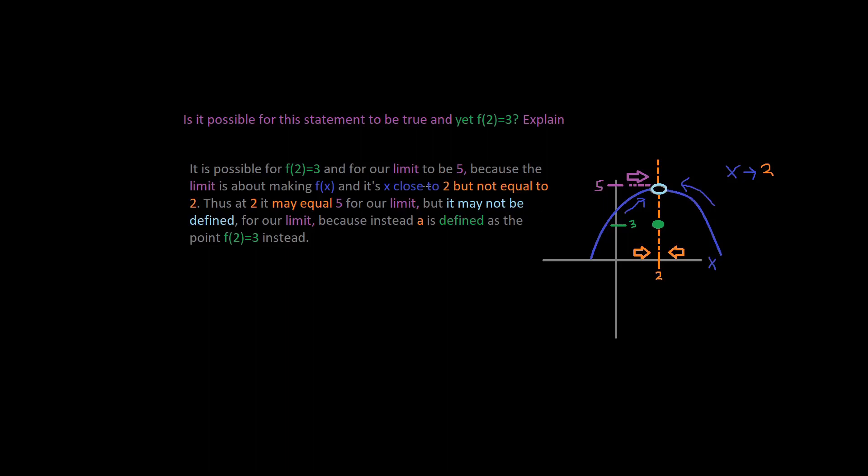And it's about making it close to our desired x value. So let's say we had a limit and then write it up. The limit, it's going to look like this: the limit as x approaches 2, right? So that's what's happening, but not equal to 2.